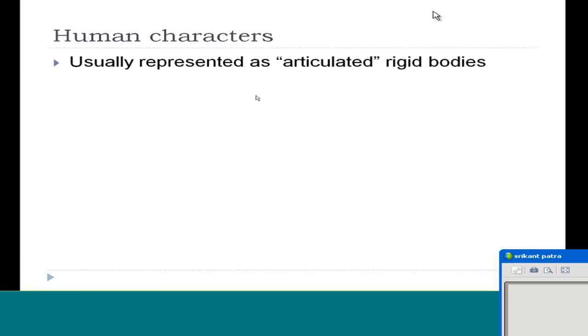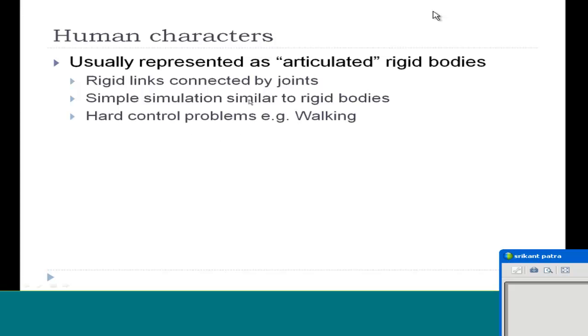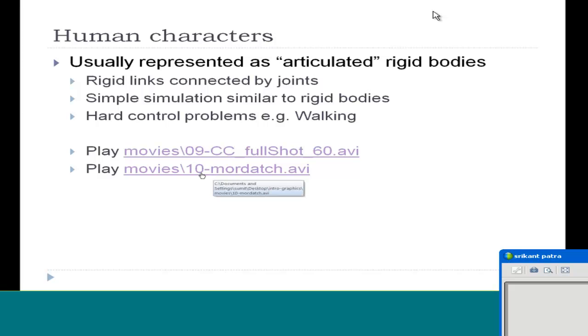You can also simulate human characters. You can represent human characters as articulated rigid bodies. Can you play movie number 10? In this movie, you see a robot-like character, but the user can give pushes to the character. It's still able to walk, still able to run on different kinds of terrain, like some very different heights. All this is also generated using simulation. Trying to specify the pushes given to the character, and the control algorithm developed by these researchers is able to simulate this character.